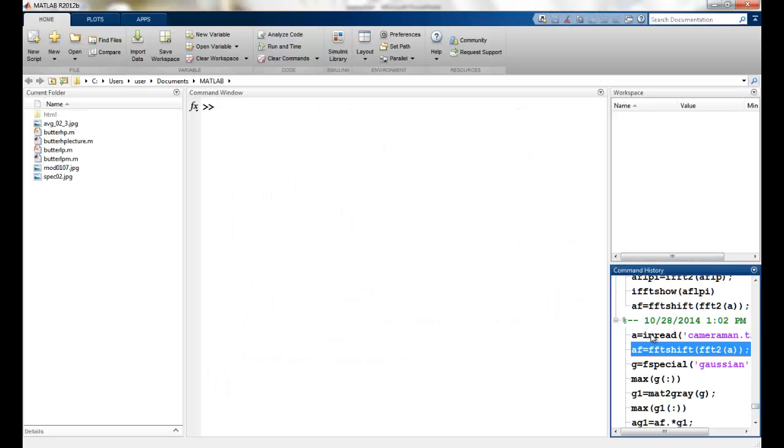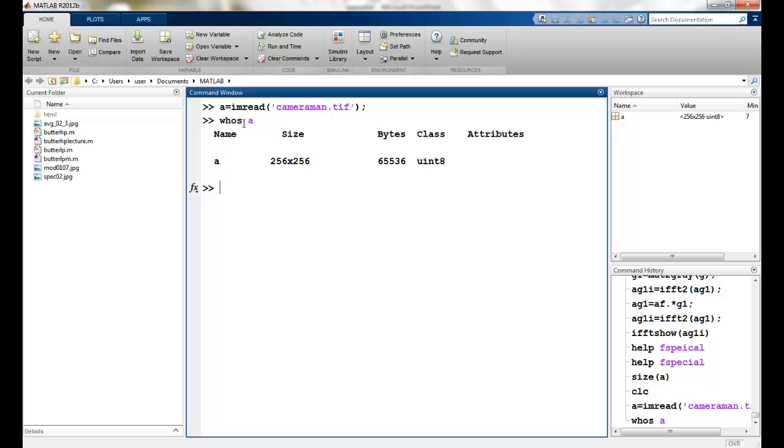So like before, I will read my cameraman image. We know that this is 256 by 256. So we will create a special filter for Gaussian using fspecial like we did in the previous classes. So we will say Gaussian. I will take it as 256 because this is a square image. So this is the size of the filter, and let's take the standard deviation as 10.